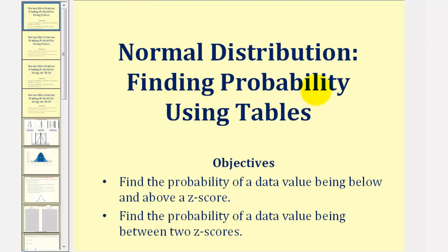Welcome to a lesson on how to use tables to find the probability of a data value being below and above a given z-score in a normal distribution, as well as how to find the probability of a data value being between two z-scores.